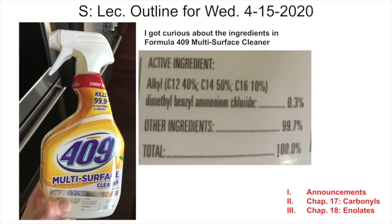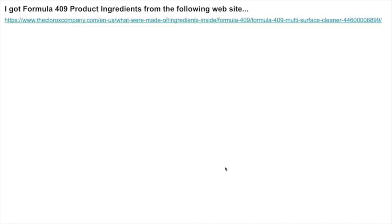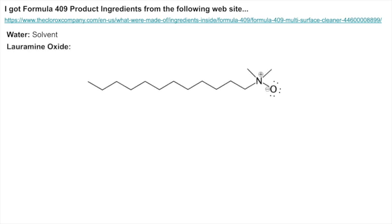The other ingredients are 99.7%, so let's see what that's all about. Come with me down my rabbit hole — it took way too much of my time but it's got good stuff in it. Then we're going to do announcements and cover chapter 17, and maybe get to chapter 18 enolates. Here's the Formula 409 ingredients I found online from the Clorox company website — it's mostly water as the solvent, and then it's got lauryl amine oxide.